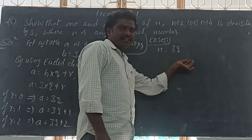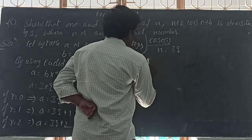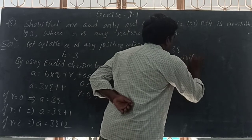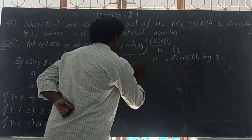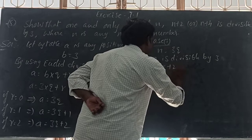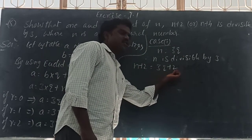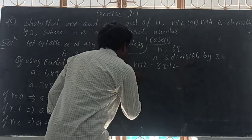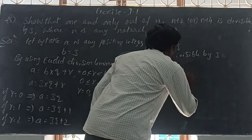That means N is a multiple of 3. Multiple is nothing but divisible. So therefore N is divisible by 3. Next, N plus 2: here N is 3Q, so that is 3Q plus 2. This number is divided by 3 and the remainder is 2. So therefore N plus 2 is not divisible by 3.